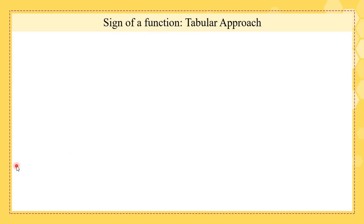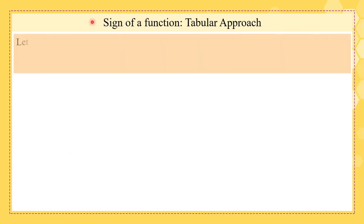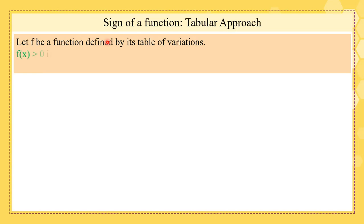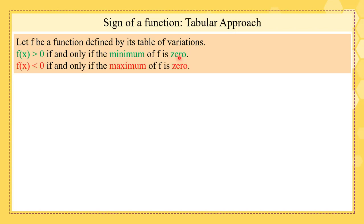Let's see the sign of a function tabularly. f is a function defined by its table of variations. We can say that f(x) is greater than 0 if and only if its minimum is greater than 0, and f(x) is less than 0 if and only if its maximum is less than 0.